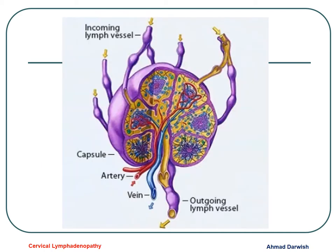If we look at the structure of a lymph node, including both blood supply vessels — the artery and veins — and we have the afferent and the efferent, the incoming lymph vessels and the outgoing lymph vessels, you will know that the lymph node is responsible for filtration of the blood.